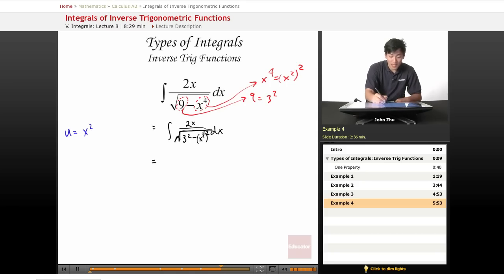Notice that the 2 term is 1 higher than this exponential term. So du will equal 2x dx, and dx equals 1 over 2x du. So plugging this back in, 2x over root of 3 squared minus u squared times dx, which is 1 over 2x du. The 2x's cancel out.